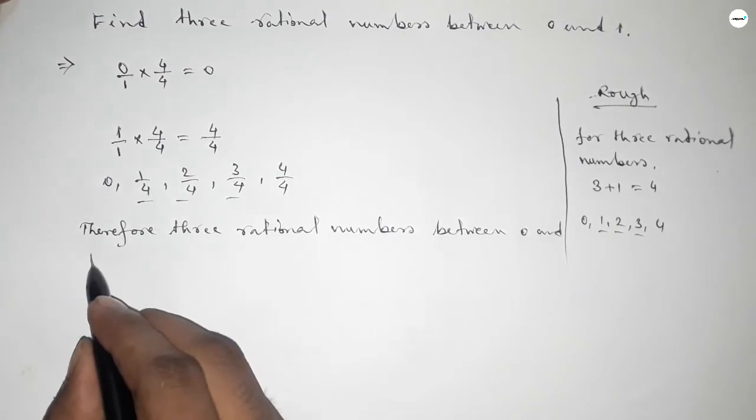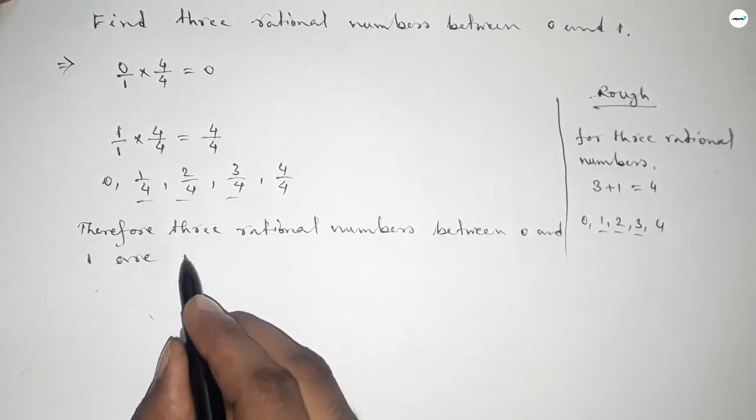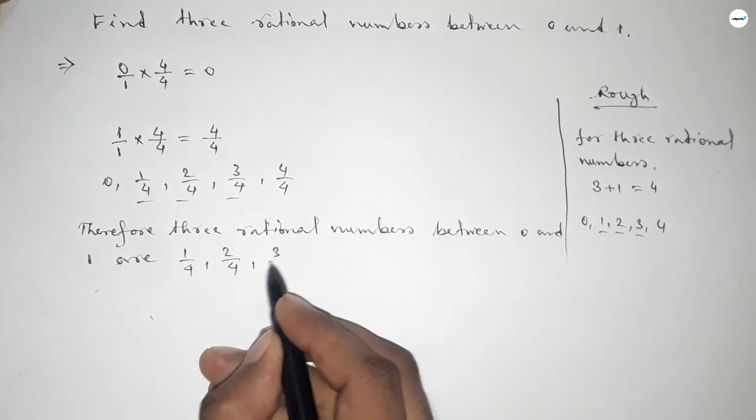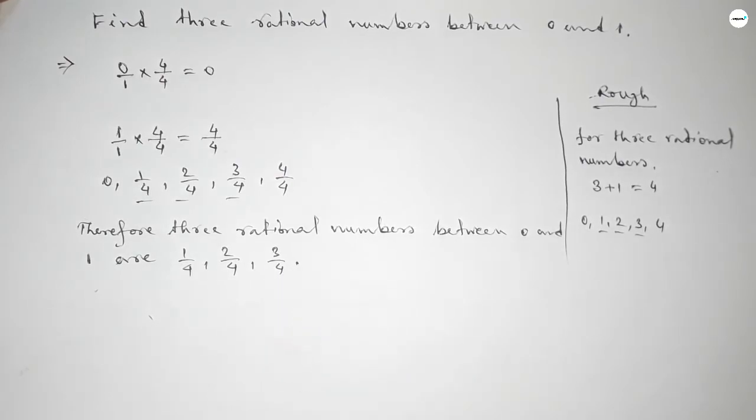Therefore three rational numbers between 0 to 1 are 1 over 4, 2 over 4, 3 over 4. So this is the process to find three rational numbers between 0 to 1. That's all, thanks for watching.